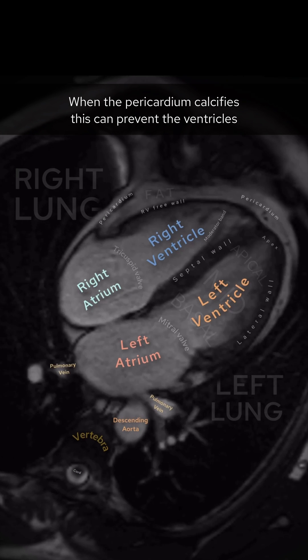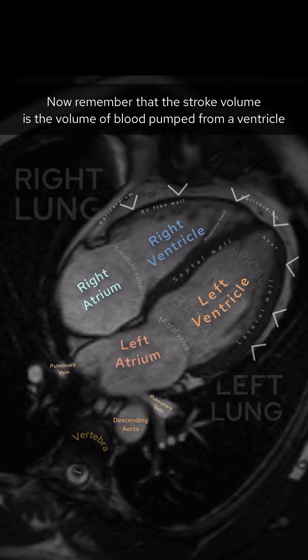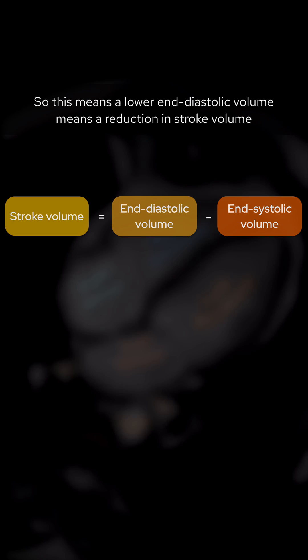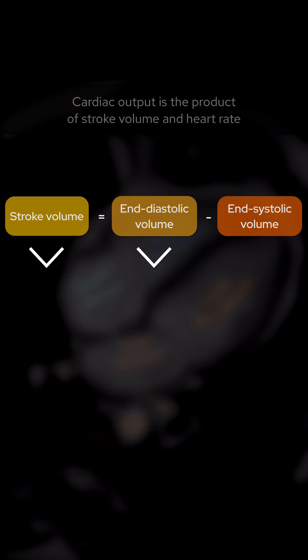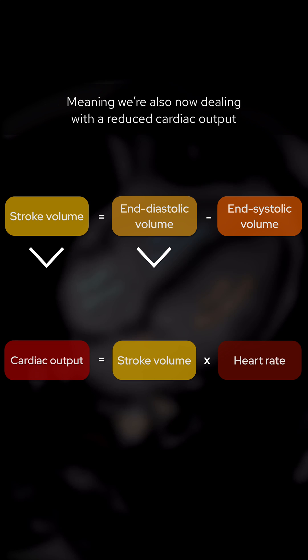When the pericardium calcifies, this can prevent the ventricles from filling with blood during diastole, leading to a reduction in end-diastolic volume. Remember that the stroke volume is the volume of blood pumped from the ventricle in one heartbeat, and it is worked out by subtracting end-systolic volume from the end-diastolic volume. So a lower end-diastolic volume means a reduction in stroke volume. Cardiac output is a product of stroke volume and heart rate, meaning we are also now dealing with a reduced cardiac output.